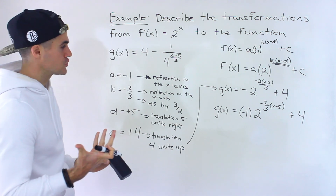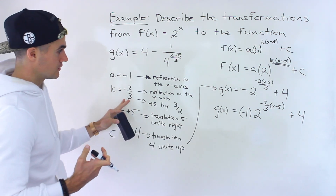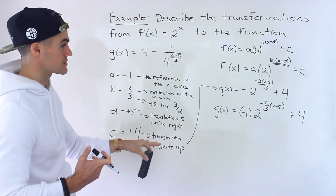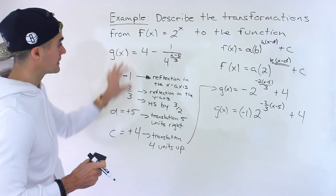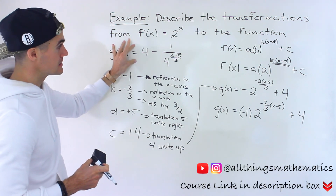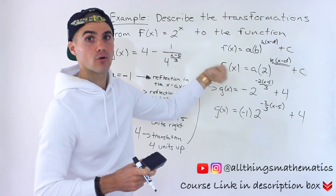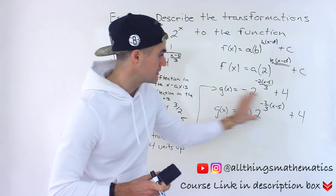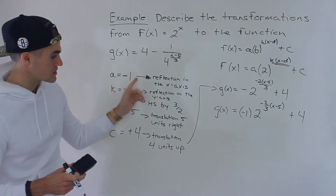And those are all the transformations we apply to the parent function 2 to the power of x in order to get to this function. The transformation values part — listing out the transformations — is not tricky once you've done it before. What's tricky is getting the given function into that standard format in order to read off the transformation values. But once you get there, listing out the transformations is not too bad.